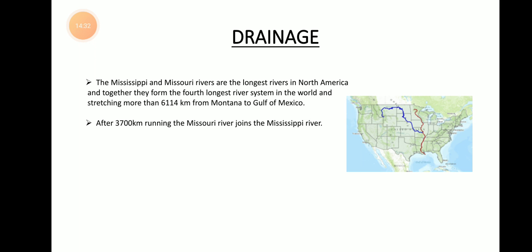The Mississippi and Missouri rivers together stretch more than 6,114 kilometers from Montana to the Gulf of Mexico. Missouri is the longest river and Mississippi is the second longest river in North America. In the map you can see the blue color river line for Missouri and the red color for Mississippi. The Mississippi starts from Montana state and ends in the Gulf of Mexico.